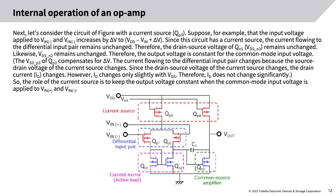Next, let's consider the circuit with the current source QP3. Suppose the input voltage applied to VIN+ and VIN- increases by delta V. Since this circuit has a current source, the current flowing to the differential input pair remains unchanged. Therefore, the drain-source voltage VDSN1 remains unchanged, and likewise VDSN2 remains unchanged. Therefore, the output voltage is constant for the common-mode input voltage. The VSDP3 of QP3 compensates for delta V. The drain current ID changes only slightly with VDS. Therefore, the role of the current source is to keep the output voltage constant when a common-mode input voltage is applied to VIN+ and VIN-.